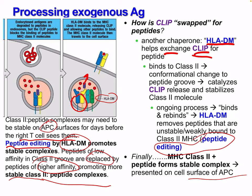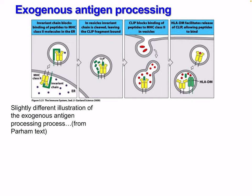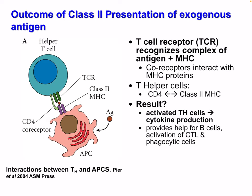HLA-DM can come in and do this over and over again until we get optimal binding, and then we present the peptide at the cell surface. In summary, for exogenous antigen processing: the invariant chain blocks binding of peptides to MHC class 2 in the ER; in vesicles the invariant chain is cleaved leaving the CLIP fragment; CLIP blocks binding of MHC in the vesicle; then HLA-DM comes in, allowing for peptides to bind.